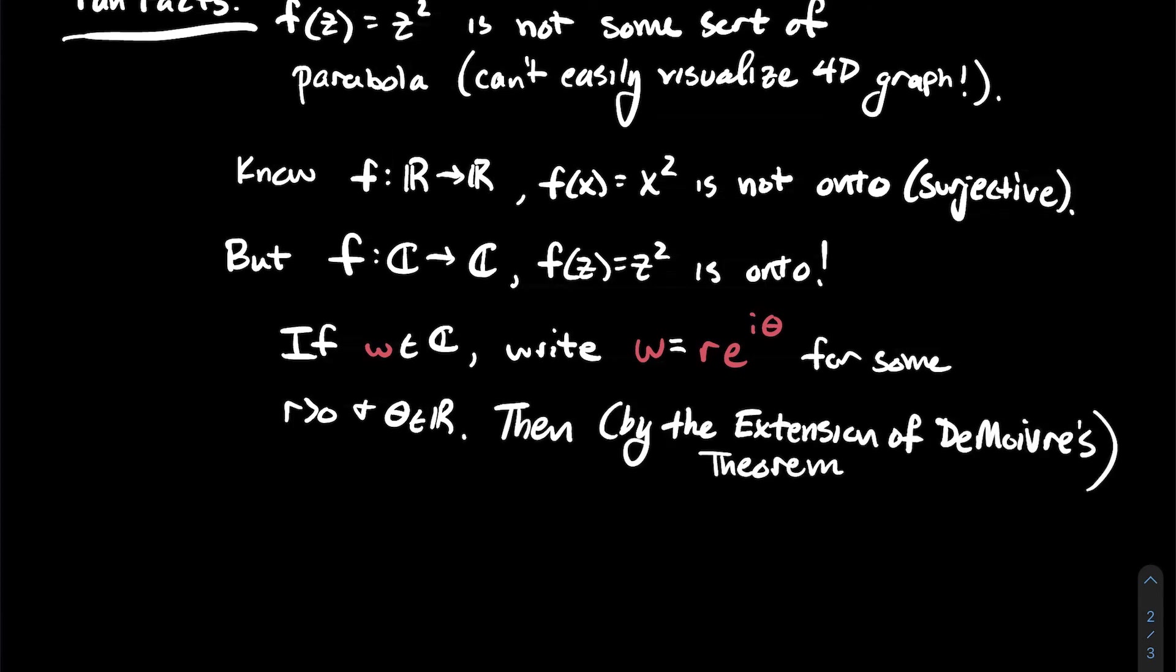All right, so I've got my polar coordinate representation of this complex number w. And then if you watched another video of mine about the extension of DeMoivre's theorem, which told me how to take powers and rational powers of complex numbers, I know how to take square roots. So let's think about what would be the square roots of w.